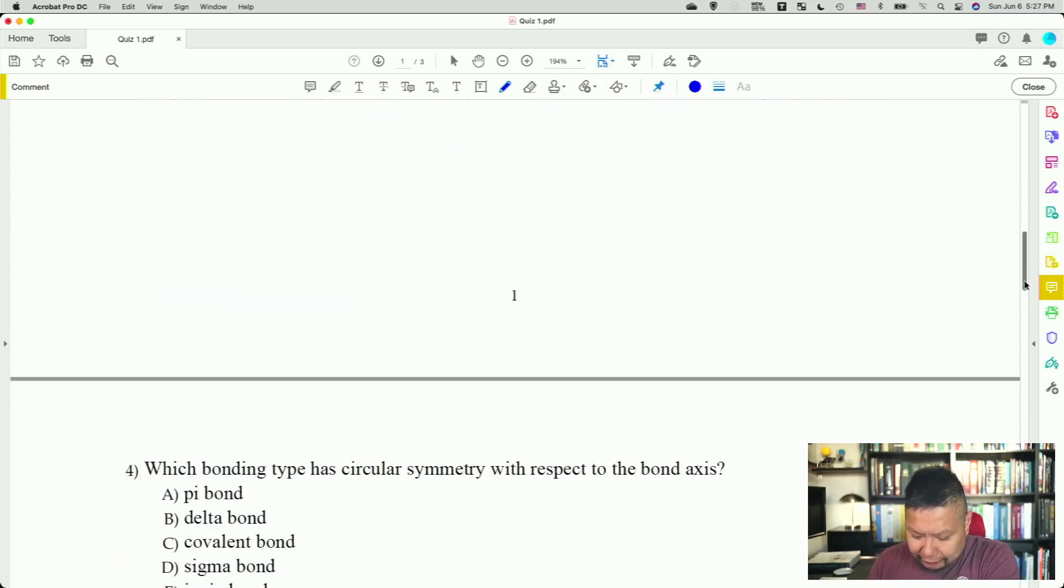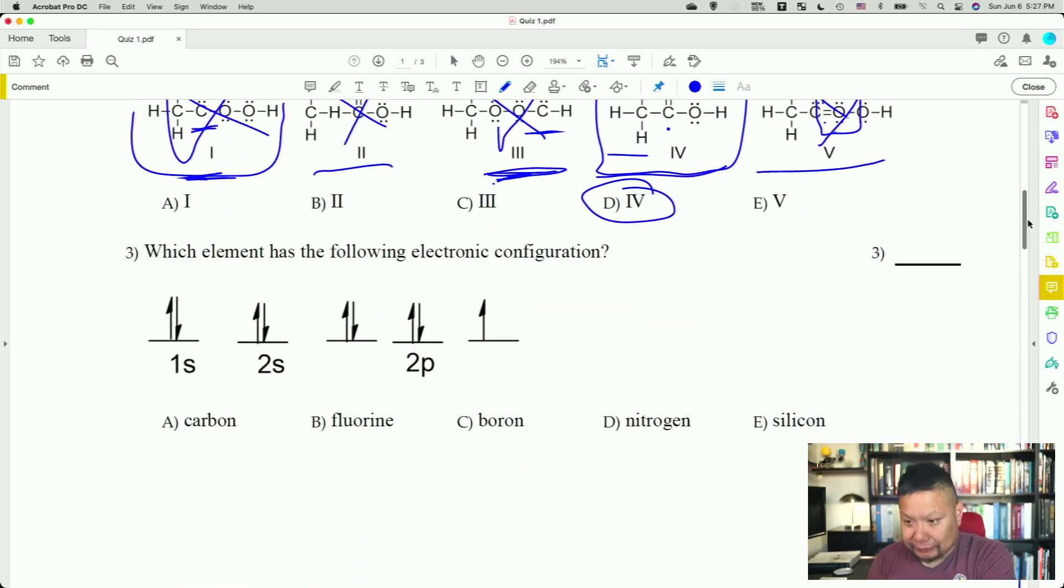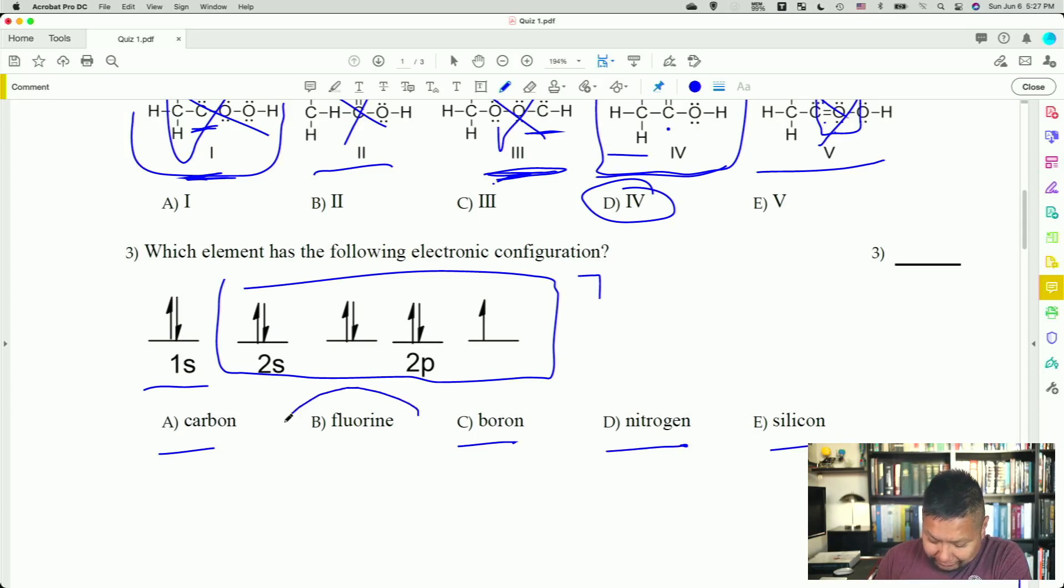Which element has the following electron configuration? So we don't even really care about the 1s orbital, do we? Because we're past row one of the periodic table. So all we really care about are these. How many electrons do you see there? There's seven. Which element is the only element that's in group seven in that group right there? Definitely not carbon. Carbon's in group four. Definitely not boron. Nitrogen's group five. Silicon, nope, definitely not. So fluorine is the only one that has a valence number of electrons being seven. So it's definitely fluorine. Answer is B there.